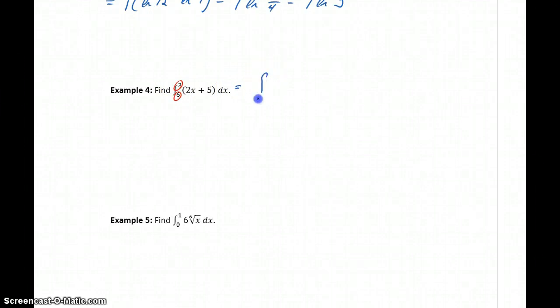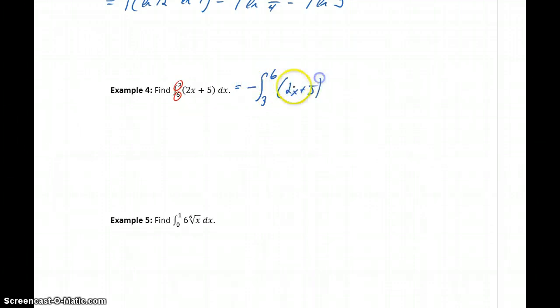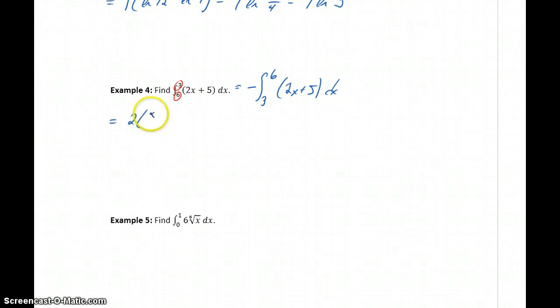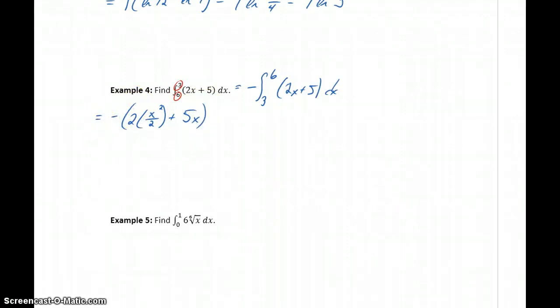In example 4 we have a slightly different case: the lower bound is 6 and the upper bound is 3. Since the integral should go from a smaller to a larger number, the first step is to flip those two values so it goes from 3 to 6, but we must place a negative sign in front of the integral. This becomes the opposite of the integral from 3 to 6 of 2x plus 5, with antiderivative x squared plus 5x, evaluated from x equals 3 to x equals 6.